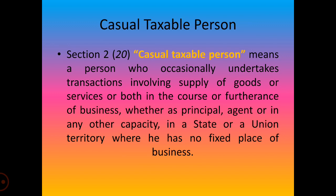A casual taxable person is someone who occasionally undertakes a transaction involving supply of goods or services or both in a state or a union territory where he has no fixed place of business. He has a PAN-based registration and uses the same application form as a normal taxable person, but has no fixed place of business in that state or union territory.